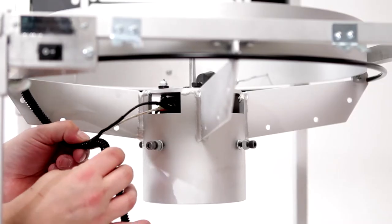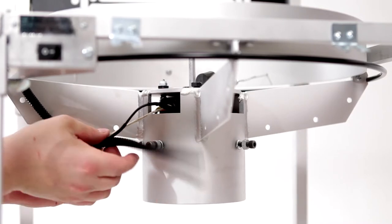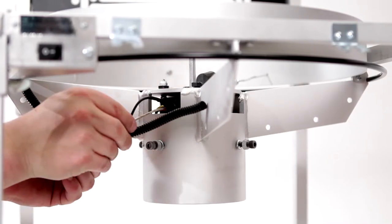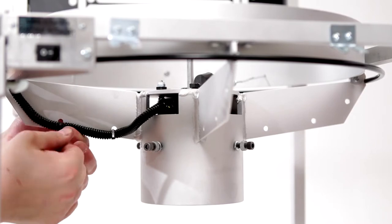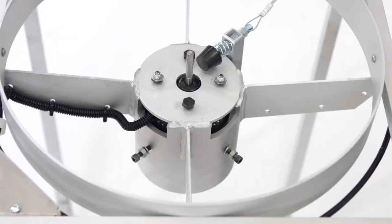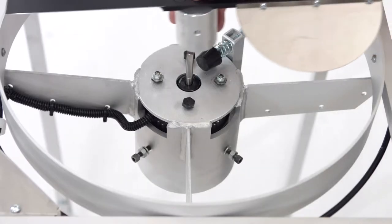Once you have confirmed the motor is working, put the protective tubing back on the wires and secure it in place with the tie wraps included with your replacement motor. You can now put your blade back onto the unit.